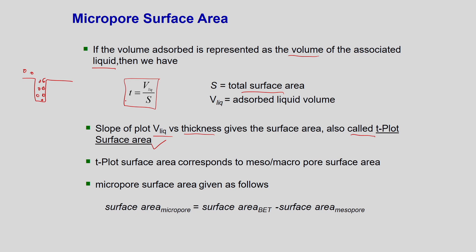The t-plot surface area corresponds to the meso and macropore surface area. The total surface area from the BET instrument includes micropores, so the micropore surface area is nothing but the total BET surface area minus the surface area of the mesopores calculated from the t-plot method. If you subtract these two, you get the surface area of the micropore.